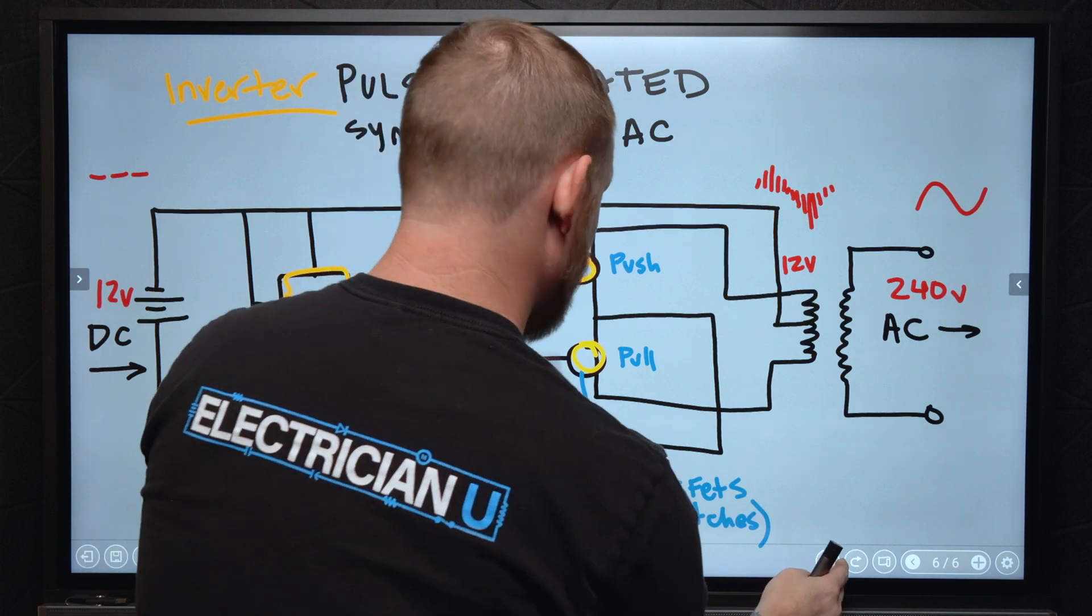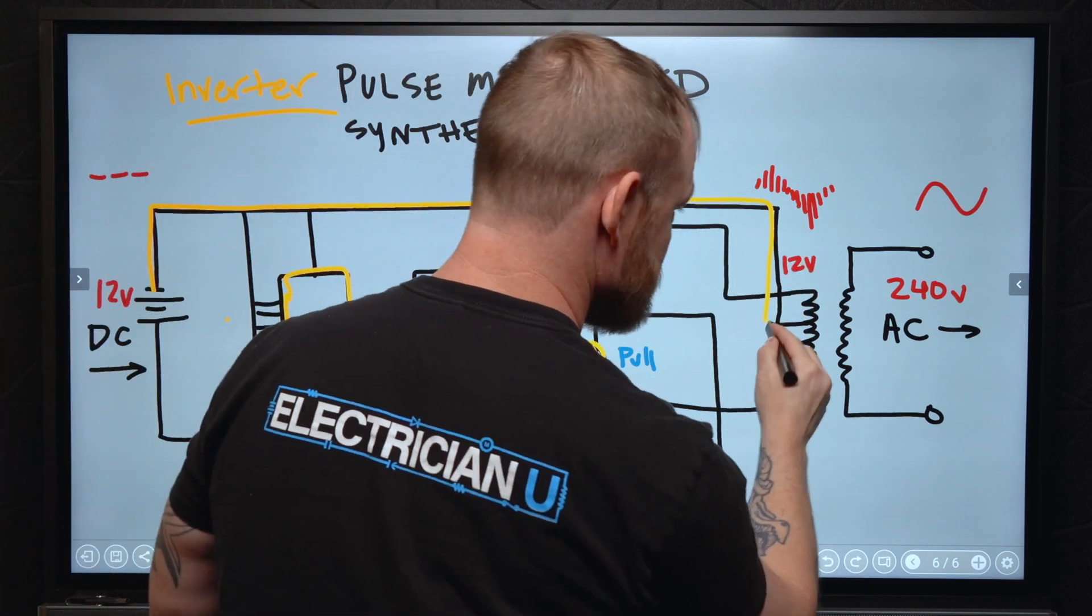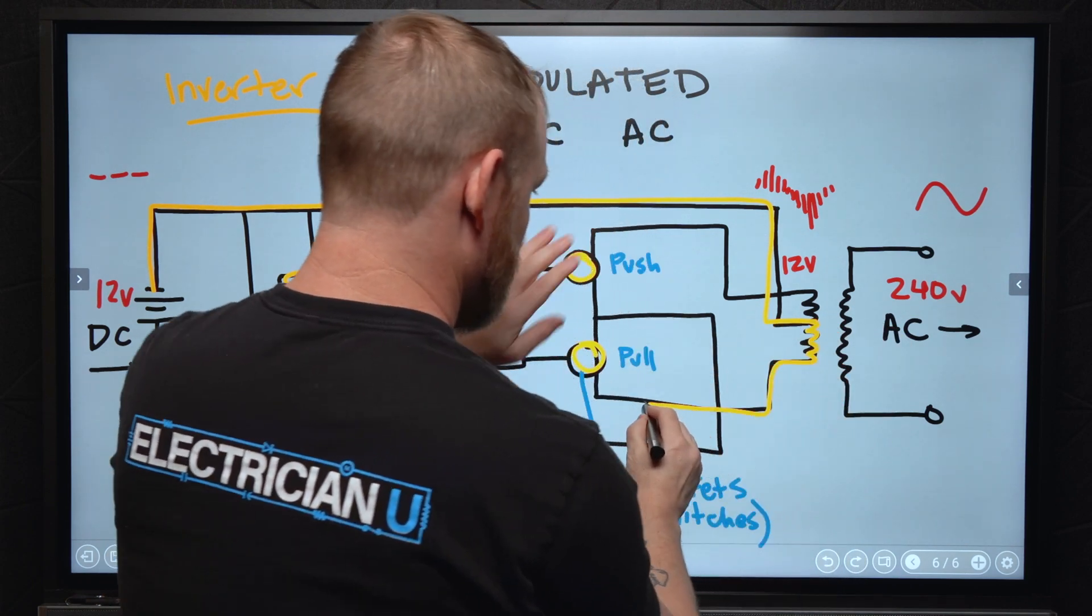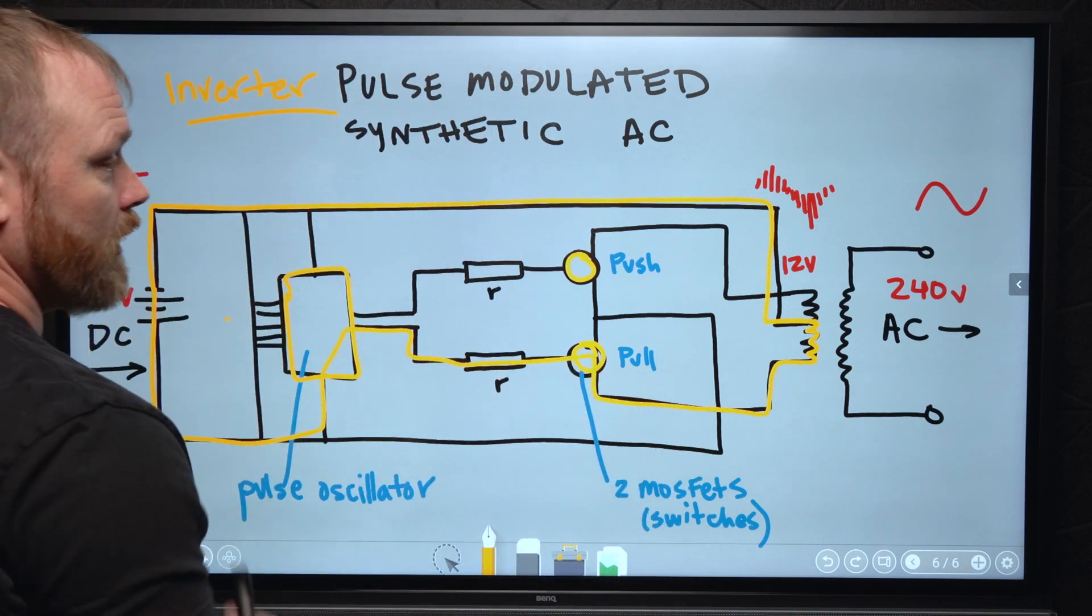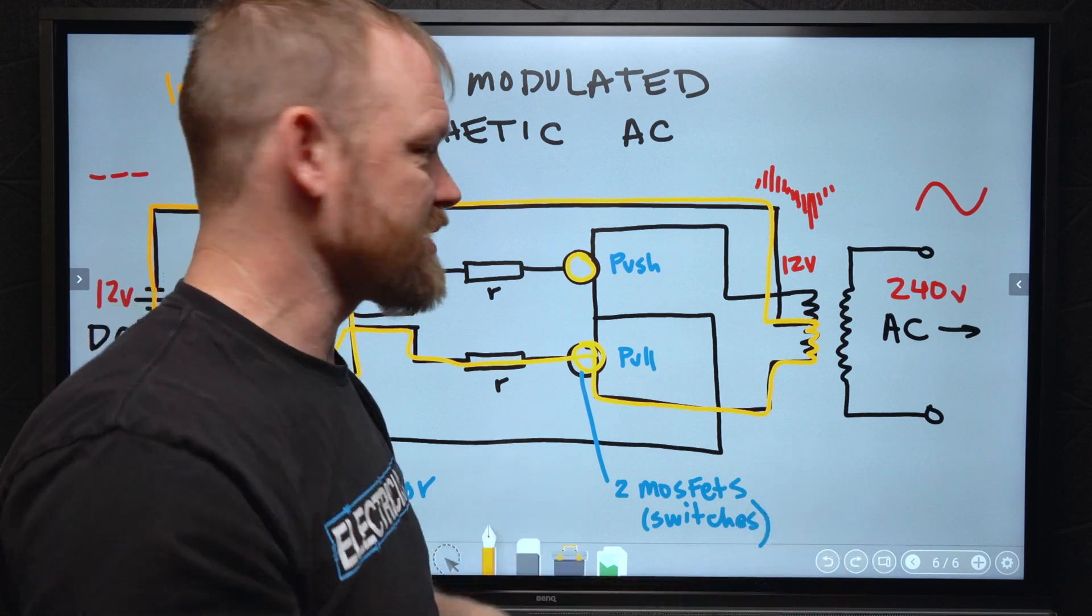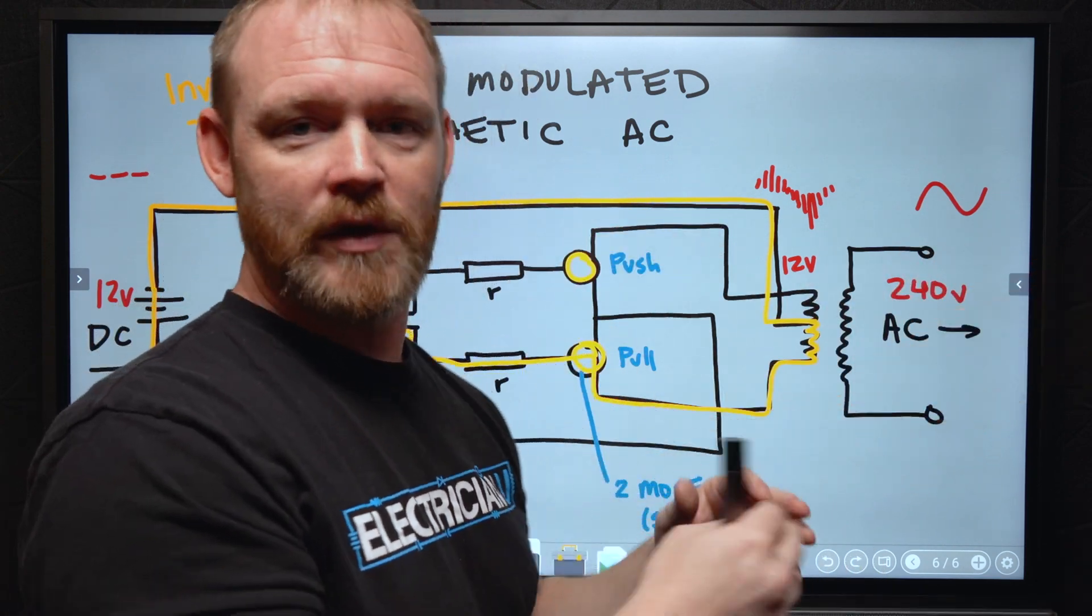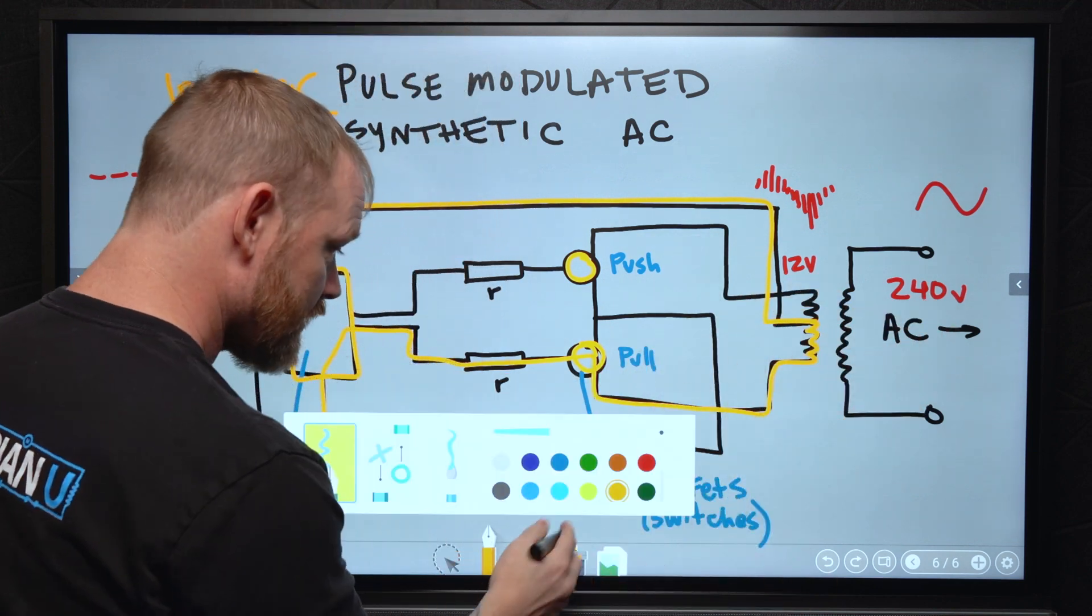And then when this one shuts off, we still need the same path. Center of our transformer on our primary side. This time, we're going to take the other path. This one has shut off. This one turned on. We have a complete circuit all the way through. So now we're allowing another pulse. So it's not that one of them is only the push and only the other one's only the pull. They take turns doing that.